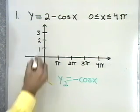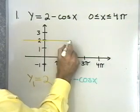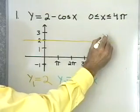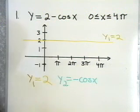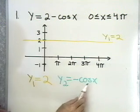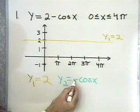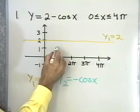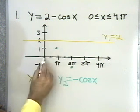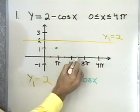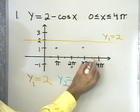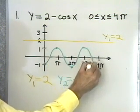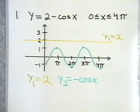Let's graph y1 equal to 2 first. That's just going to be a straight horizontal line through 2 on the y-axis. Now the second graph is y2 equal to negative cosine x — it's a cosine graph reflected about the x-axis. It'll start at negative 1, go up to 0, then up to positive 1, back down to 0, and down to negative 1 between 0 and 2π. Then it does the same thing again, because the period is 2π.